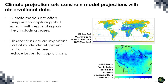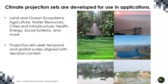Climate models are often designed to capture global signals, but this can lead to regional biases that we can correct by comparing with observations. This is one of the reasons NASA is so strongly connected to climate science and climate projections. Observations are an important part of model development and can also be used to reduce biases for applications — for example, NASA products capturing soil moisture and the complex nature of precipitation around the world. Climate projection sets are developed for use in specific application areas including land and ocean ecosystems, agriculture and food systems, water resources, cities and infrastructure, human health, energy, and the evolution of social systems.